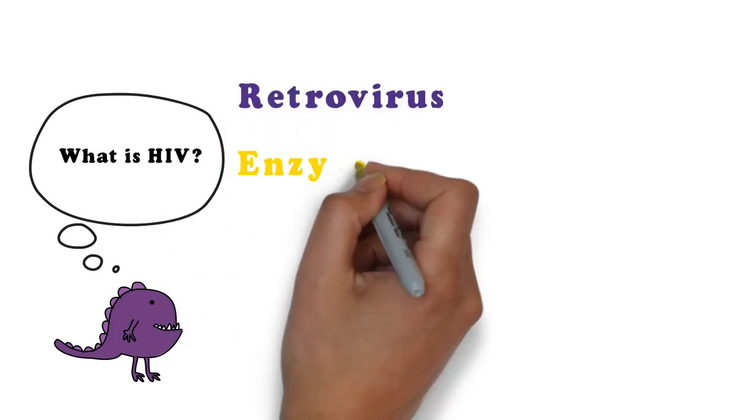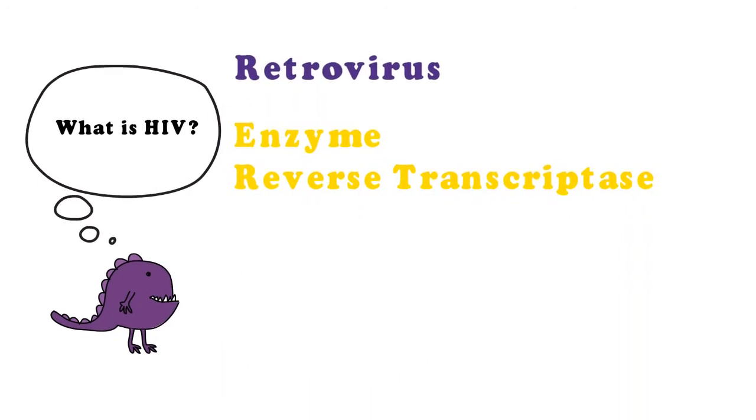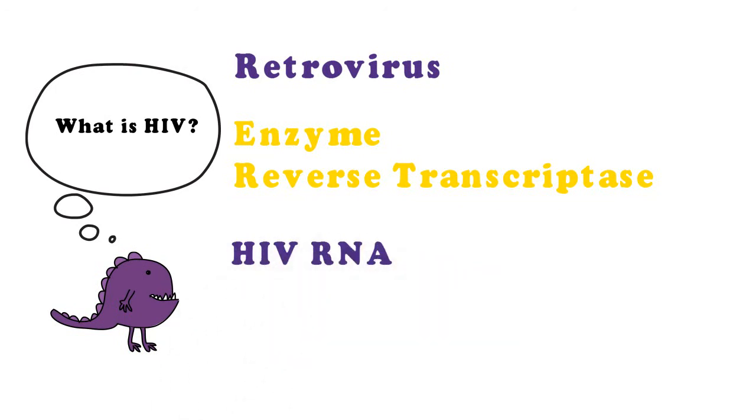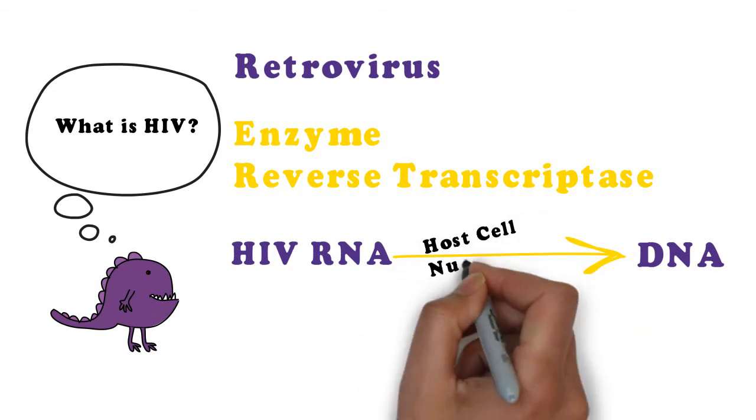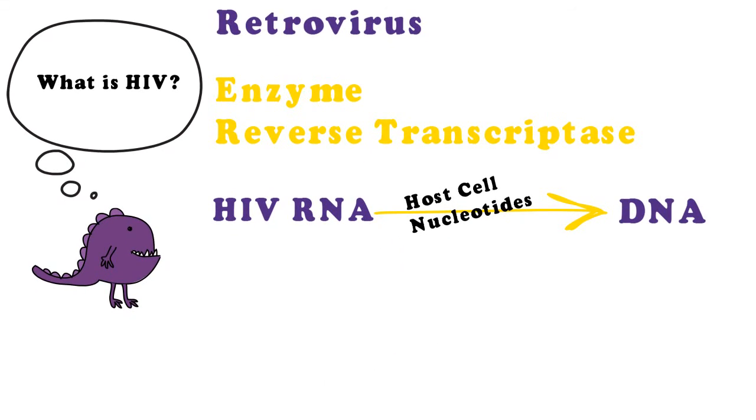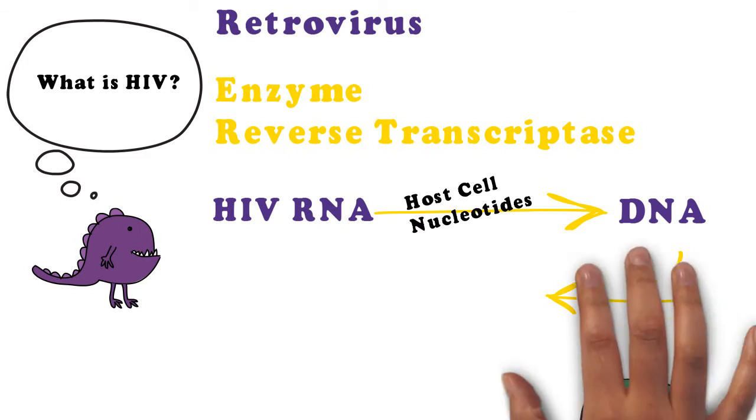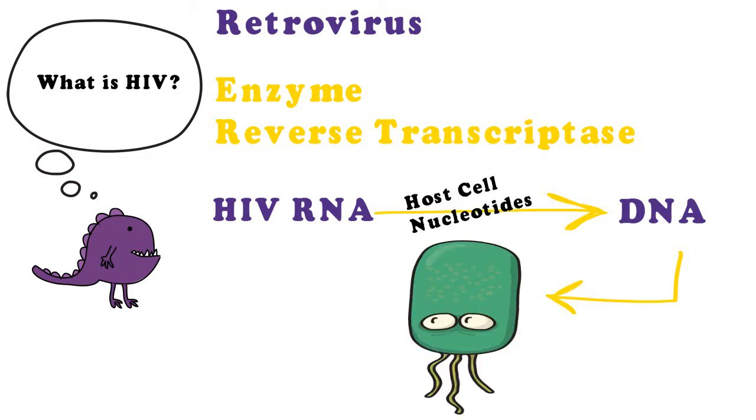HIV is a retrovirus, which means that it uses a reverse transcriptase enzyme. This protein complex transcribes HIV's genome, which is an RNA single strand, into a DNA double strand, which then gets integrated into the host cell's genome.